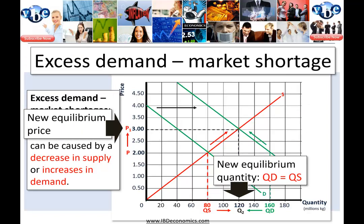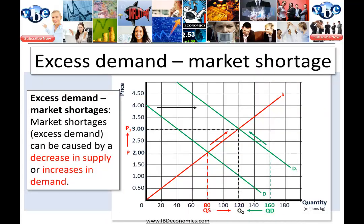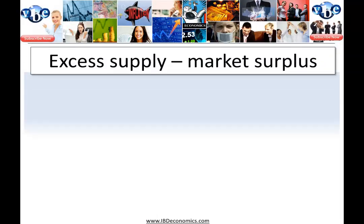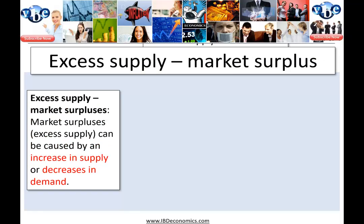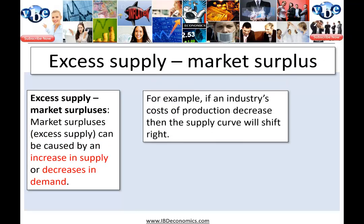A new equilibrium price is established — in this case it's three dollars — and a new equilibrium quantity, again where quantity demanded equals quantity supplied: in this case, 120 million kgs of sugar. Market surplus is the opposite of our market shortage. Market surpluses — excess supply — can be caused by an increase in supply or a decrease in demand, so it's just the opposite of our shortage.